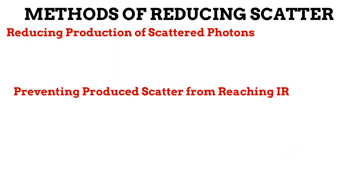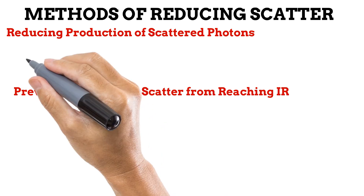There are multiple strategies followed to reduce the amount of scatter on an image. These strategies can be grouped into two. First is the set of strategies concerned with reducing the amount of scatter that is produced. The second set of strategies is more concerned with preventing scatter that has been produced from reaching the image receptor.